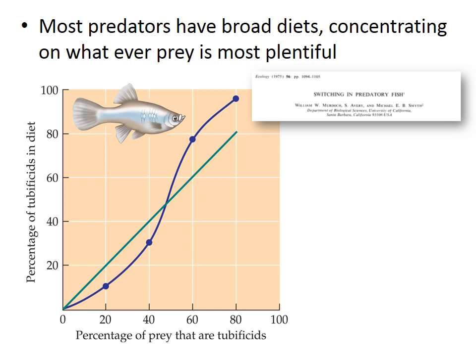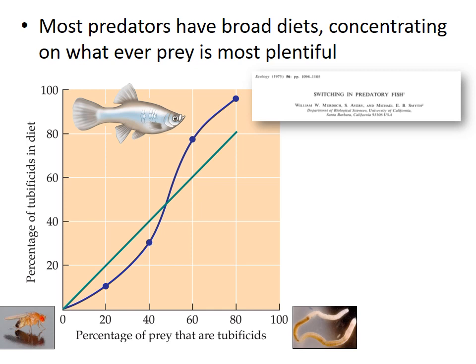A study conducted in the 1970s by William Murdoch and others at the University of California studied the tendency of a predatory guppy to switch its prey choice. The guppies were given a mixture of two different prey: Drosophila fruit flies on the water's surface, and tubificid worms on the bottom of the aquarium. By placing prey at different locations, Murdoch ensured that prey were chosen deliberately and not consumed by accident. They varied the ratio of flies to worms gradually over 12 days, transitioning from a 1-to-4 worm-to-fly ratio to a 4-to-1 worm-to-fly ratio.